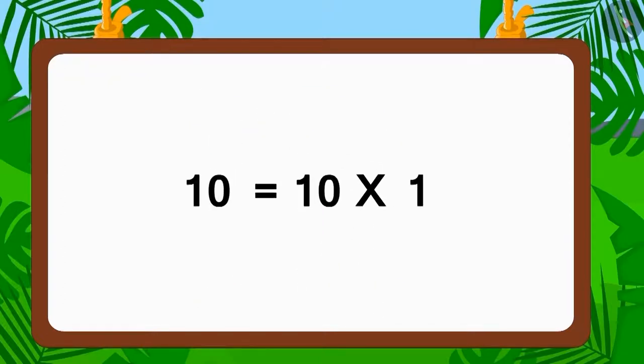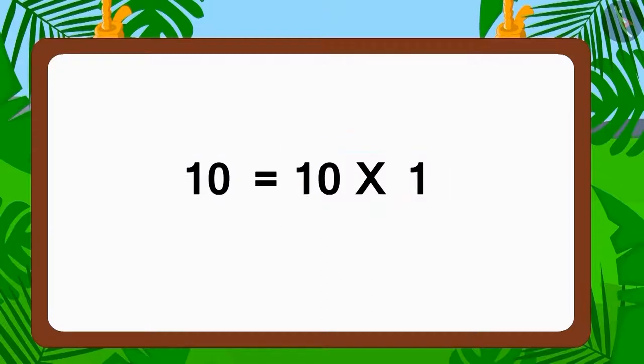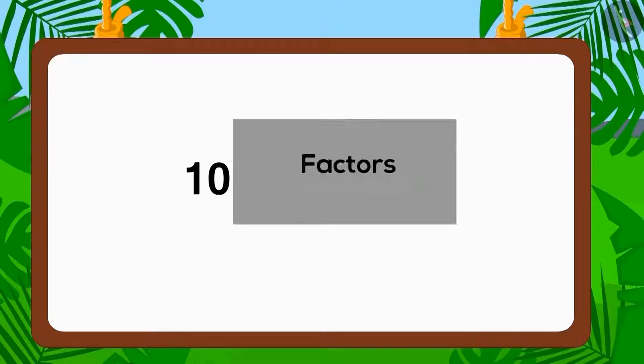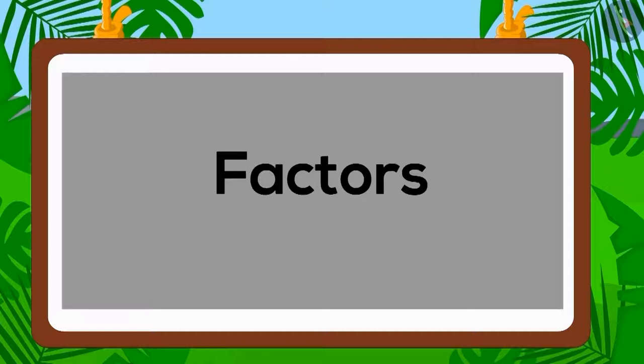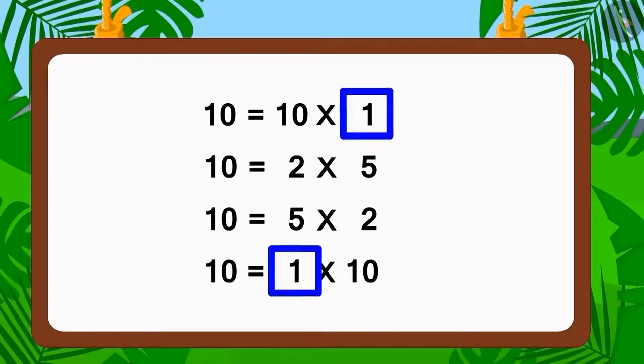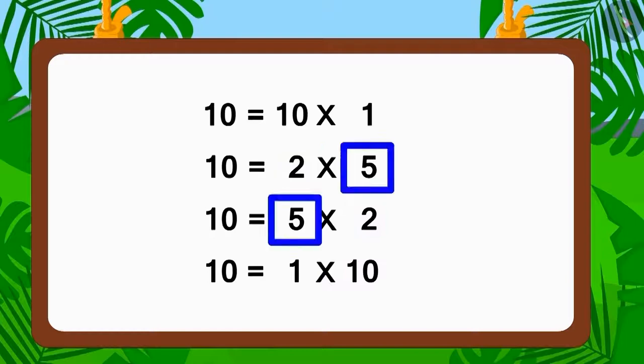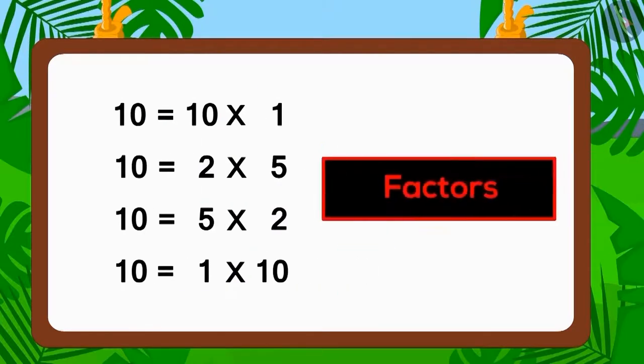So, this is how we can write any number as a multiplication of two numbers. The two numbers that form part of the multiplication are known as factors. Here, one, two, five, and ten are factors of ten.